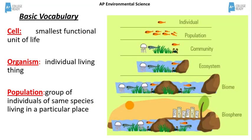The cell is the smallest functional unit of life. This means that it carries out all processes found in all living things, such as taking in food, releasing waste, and reproduction. The organism is an individual living thing composed of many cells. A goldfish is an example of an organism in the diagram.